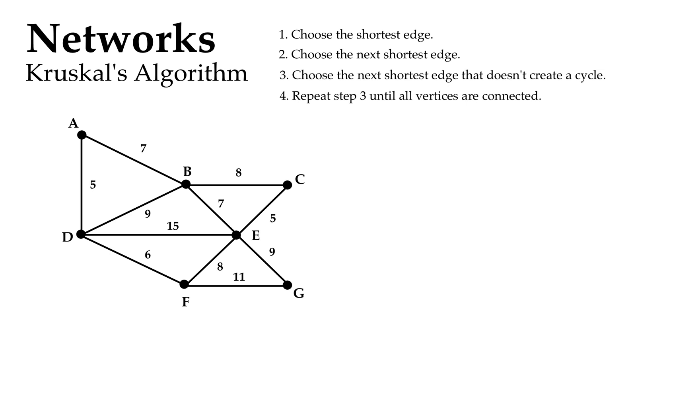You can have a look at this diagram and you can see there are two shortest edges, so it doesn't really matter which one I choose. We're going to choose one of the fives. Now choose the next shortest edge. Unlike Prim's, we don't have to have it connected to our previous selection, so our next shortest edge is the other five over there.